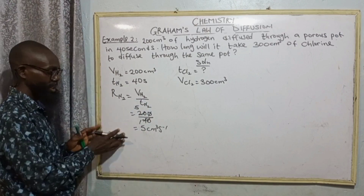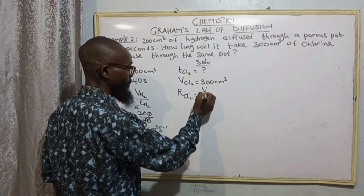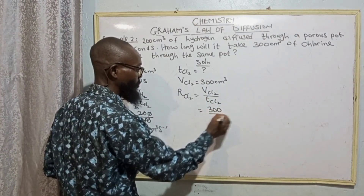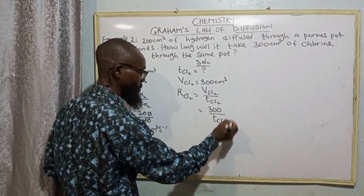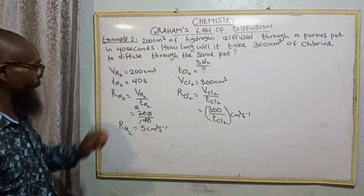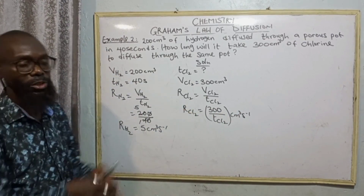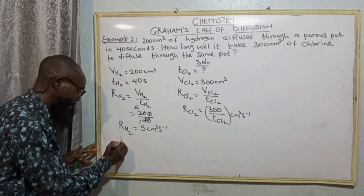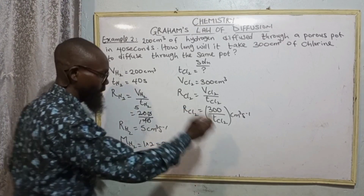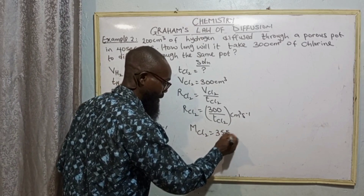Rate of chlorine equals volume of chlorine divided by time taken for chlorine: 300 divided by TCl₂ cm³ per second. We now want to compare the rate of diffusion of chlorine to relative molecular mass because we can get the relative molecular mass of chlorine and hydrogen. Molar mass of hydrogen: atomic mass is 1 times 2, that is 2. Relative molecular mass for chlorine: 35.5 multiplied by 2, which is 71.